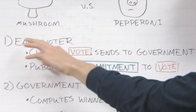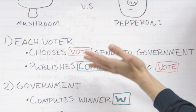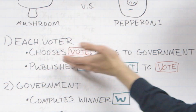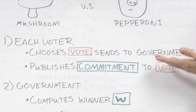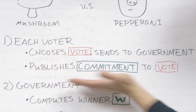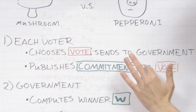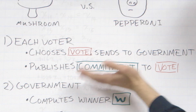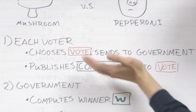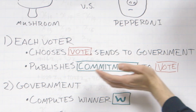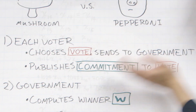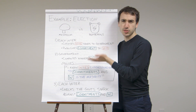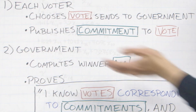Let's go into detail on what the election scheme could look like. First, each voter will choose their vote — be it mushroom or pepperoni — and send that vote to Alice, the government. Next, they're going to publish a commitment to their vote. The commitment will be public, the vote will be secret. This commits the person to the vote in the sense that they won't be able to change their vote while keeping the commitment the same.